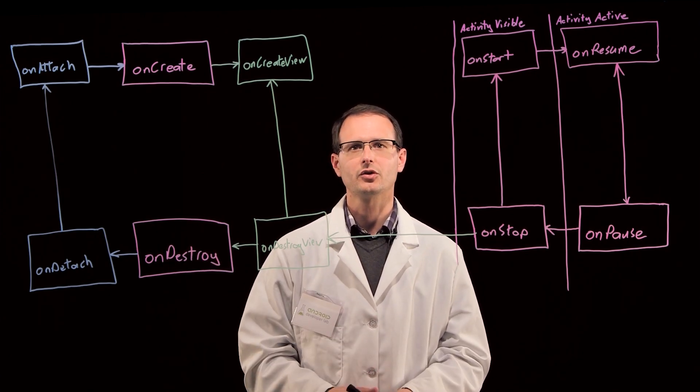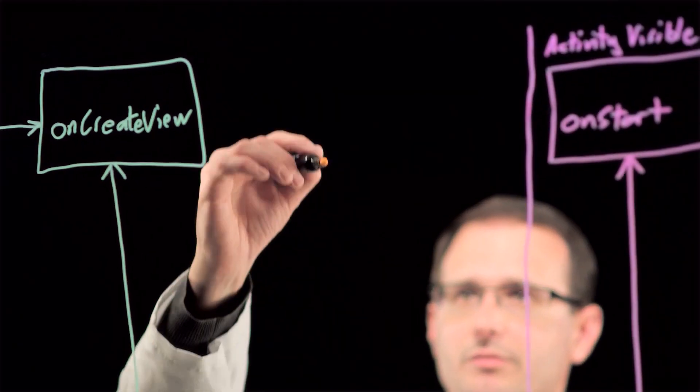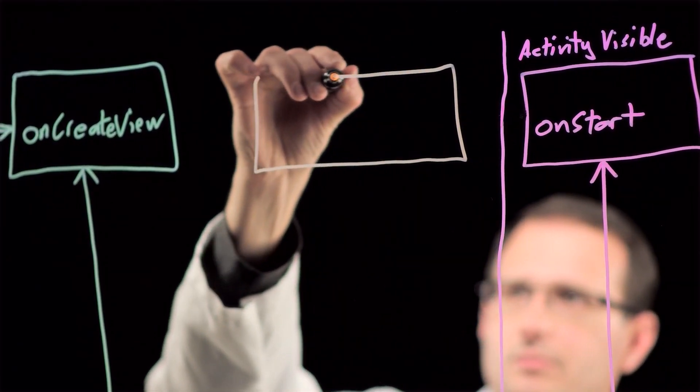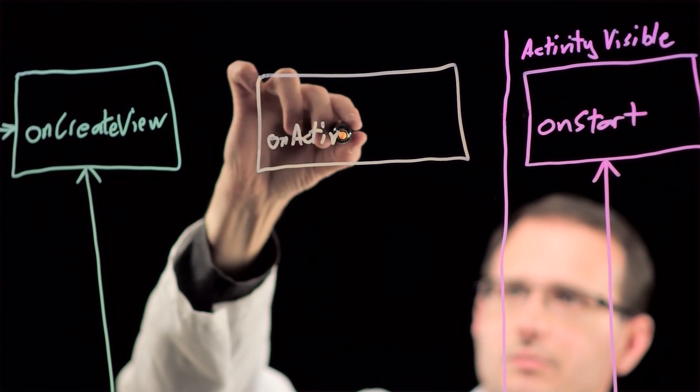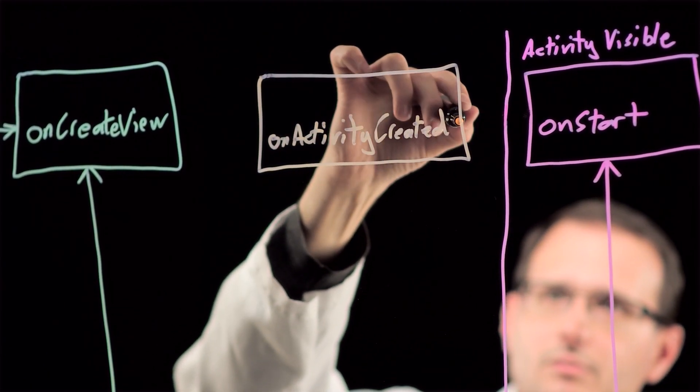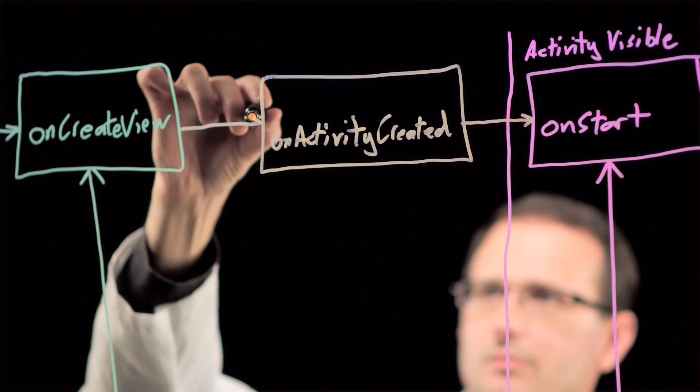The final piece of the puzzle is onActivityCreated. This notifies our fragment that the parent activity has completed its onCreate handler and represents the point at which we can safely interact with its UI, potentially including other fragments.